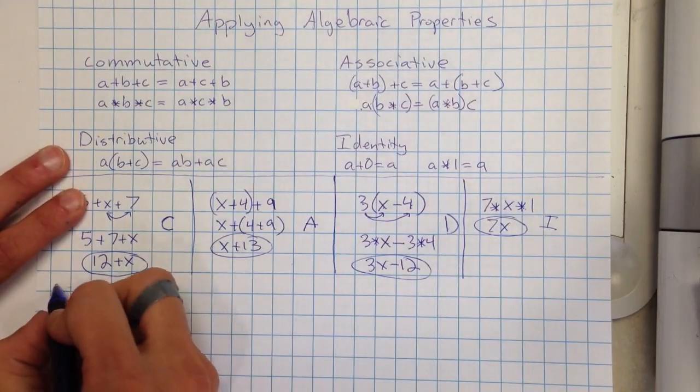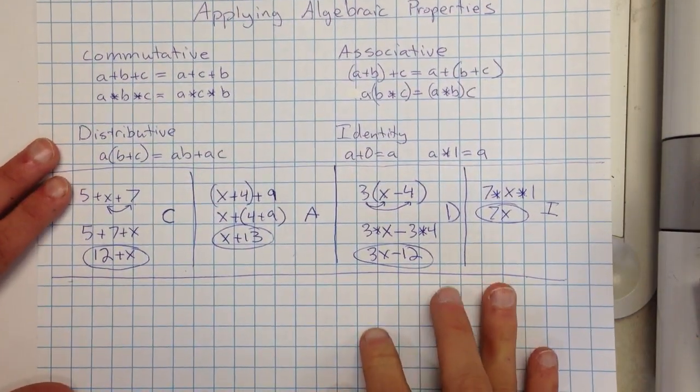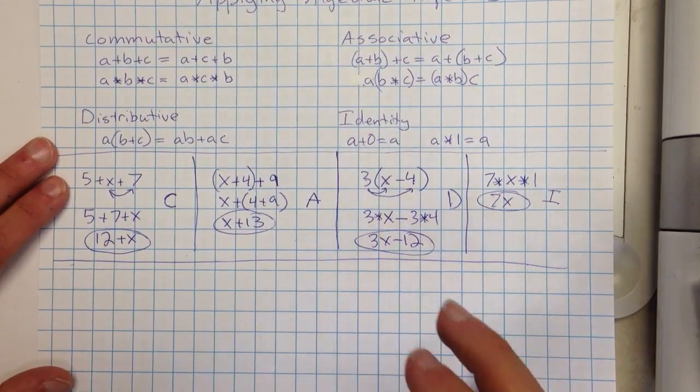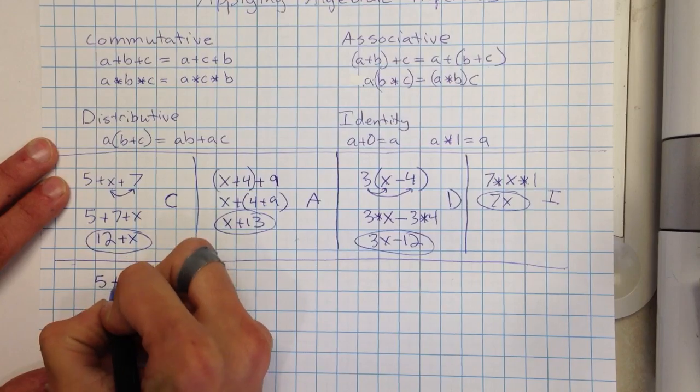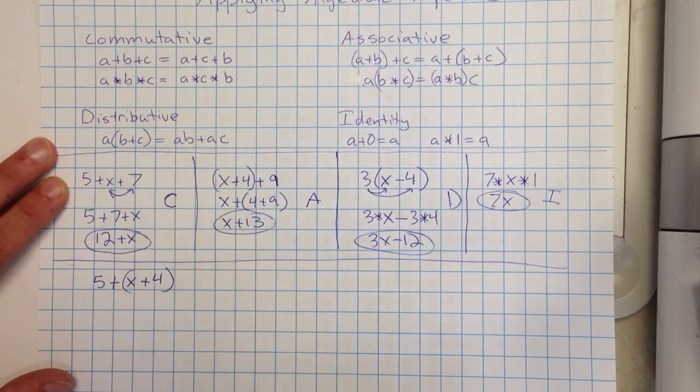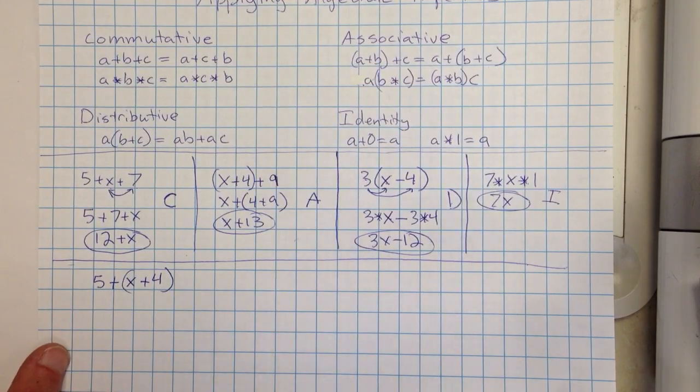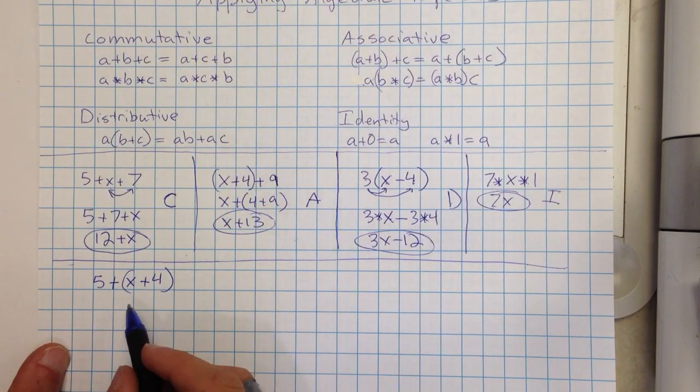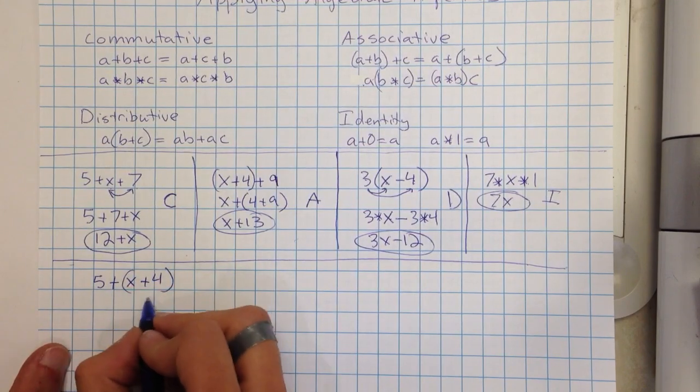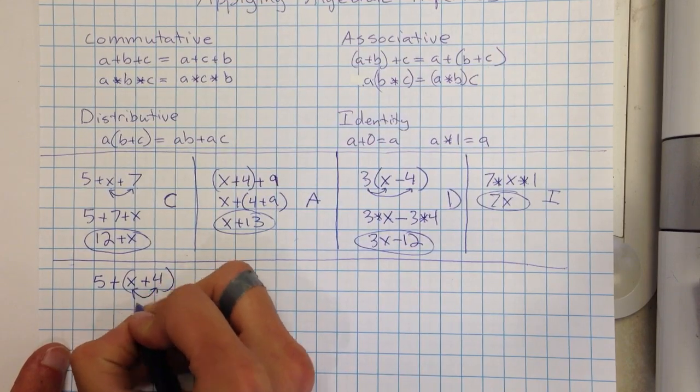We're going to also look at how these problems can actually be a little bigger, or we might even use two different properties at once. So let's say I had 5 plus X plus 4, but those are in parentheses. Now if I really want to break down my thinking step by step, the first property I can apply is I can look and say I want to add that 5 and the 4, but they're not next to each other yet. I always want to work left to right. So I'm going to switch the place of the X and the 4. I'm going to move those numbers.